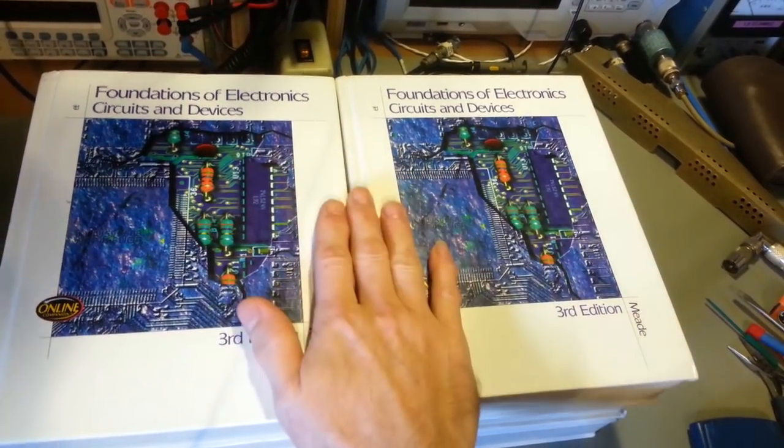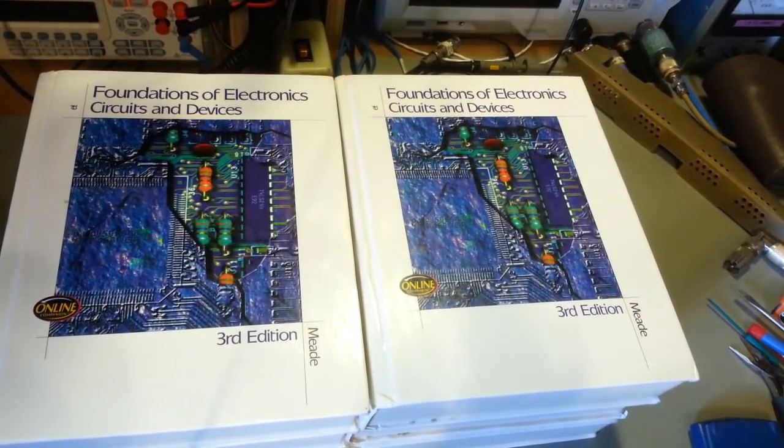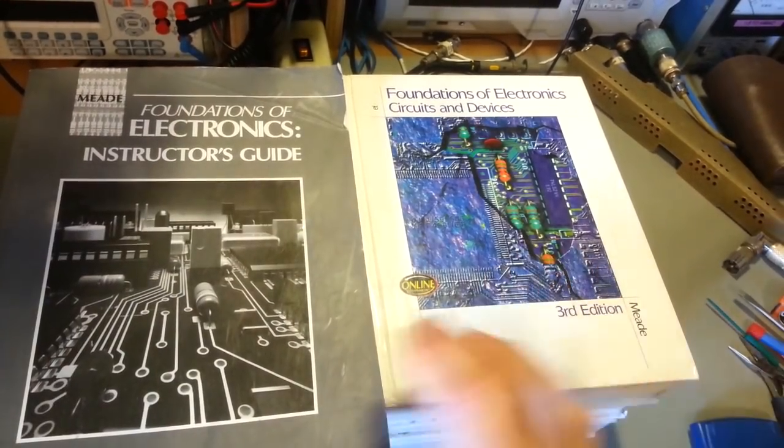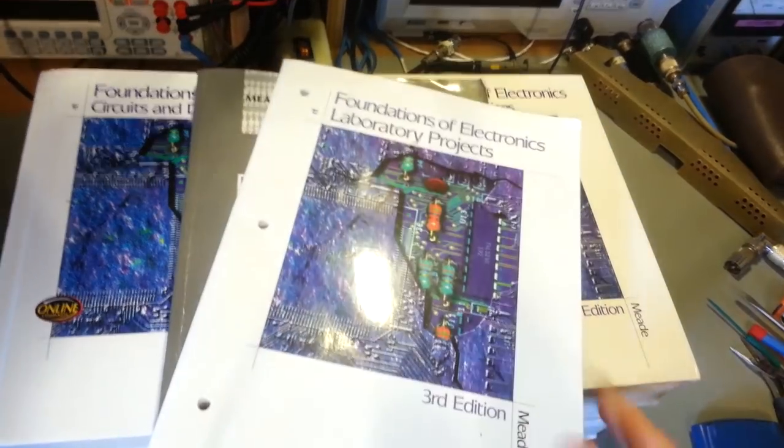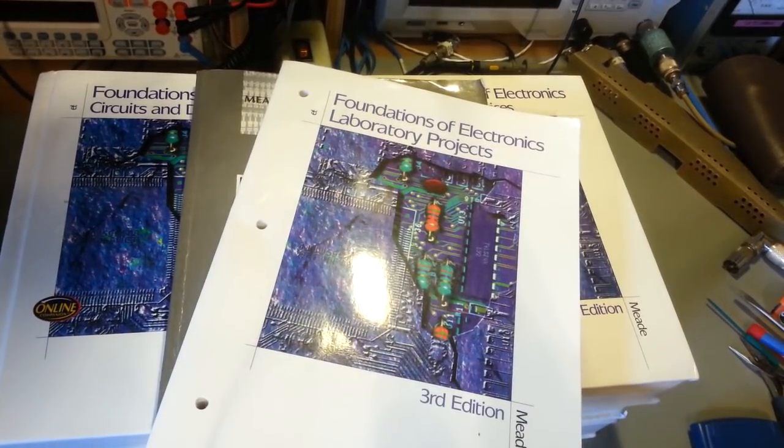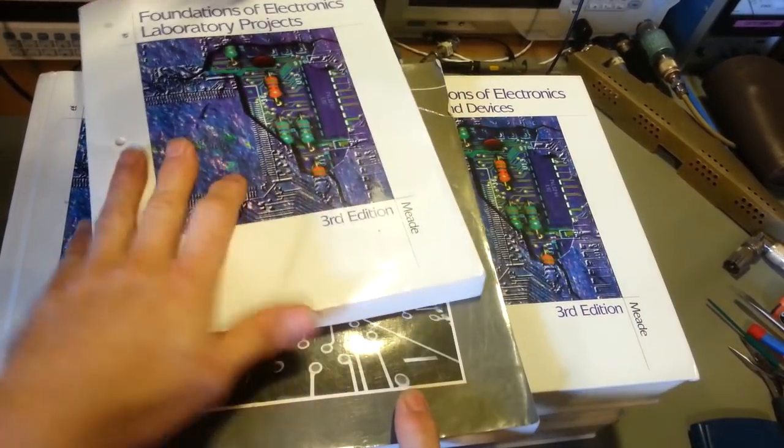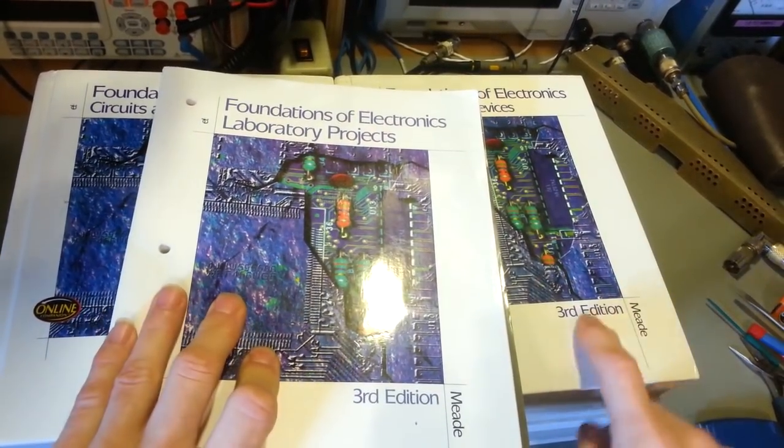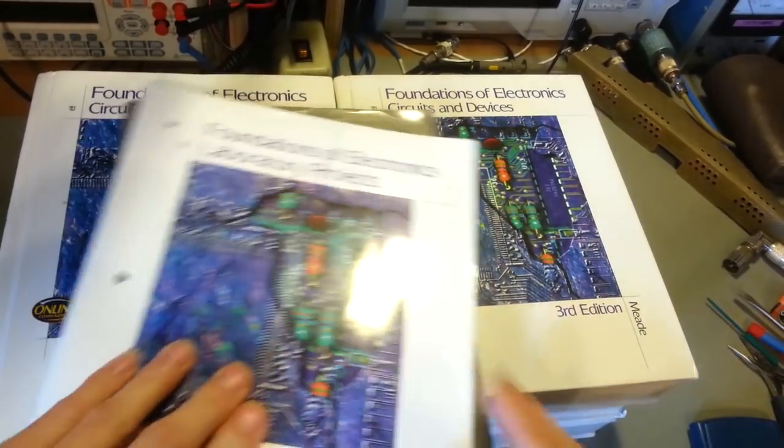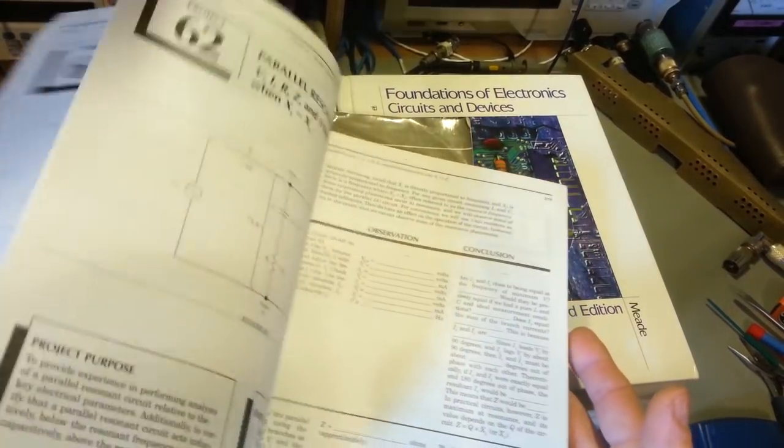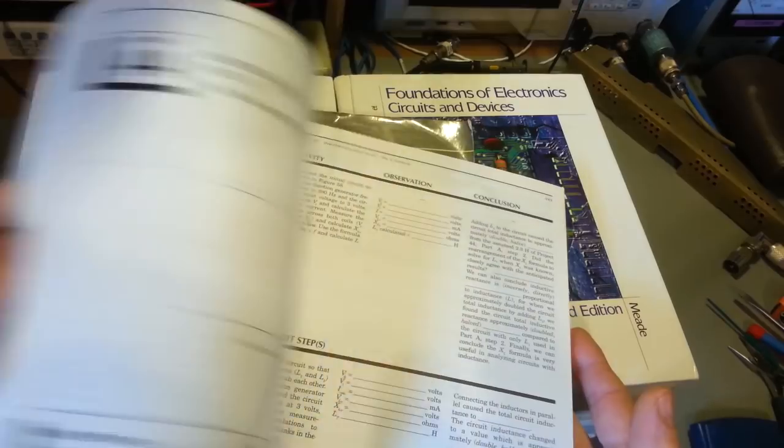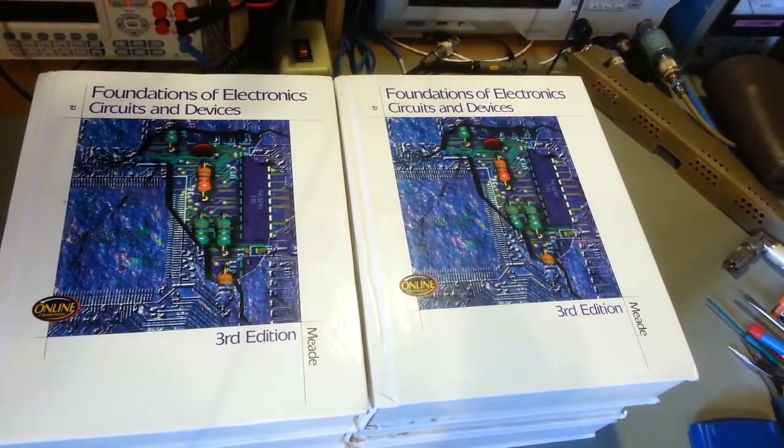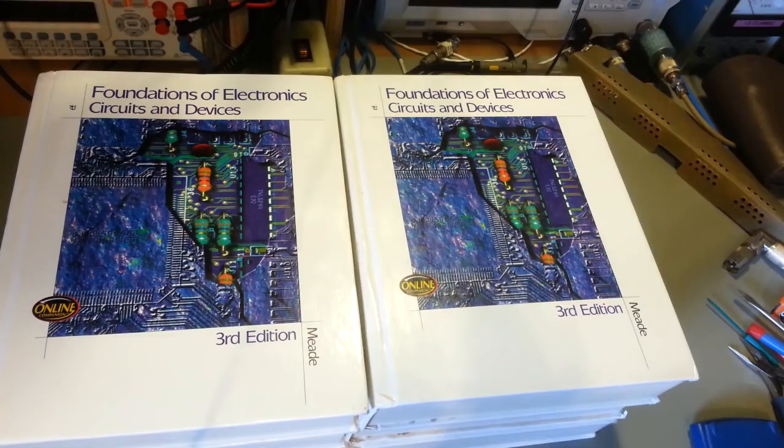Now there are actually other things that you can get with these books. You can get companion manuals with these, you can get instructor's guides. Of course if it's a school book there's going to be an instructor's guide. They also have laboratory projects. In the third edition they go along with this series. Actually for each of the different editions of the book I have all of the companion manuals. These just add extra test questions and extra projects and sample circuits and whatnot for laboratory.